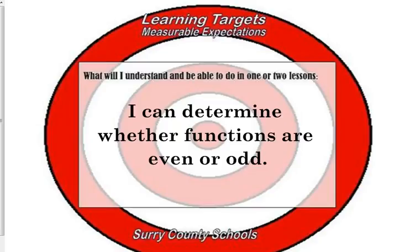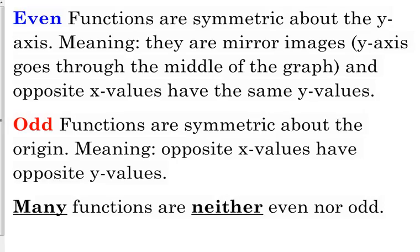First of all, what it means to be an even or an odd function. So if we're looking graphically, even functions are symmetric about the y-axis, meaning that they are mirror images. If you draw a line through the y-axis, that's going to go straight through the middle of your graph and cut it into two symmetric pieces.